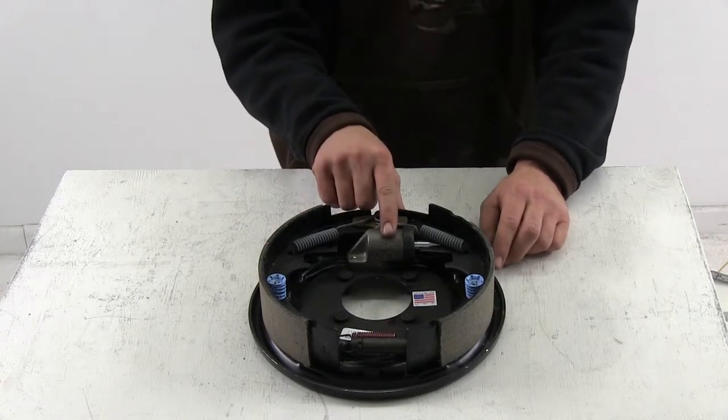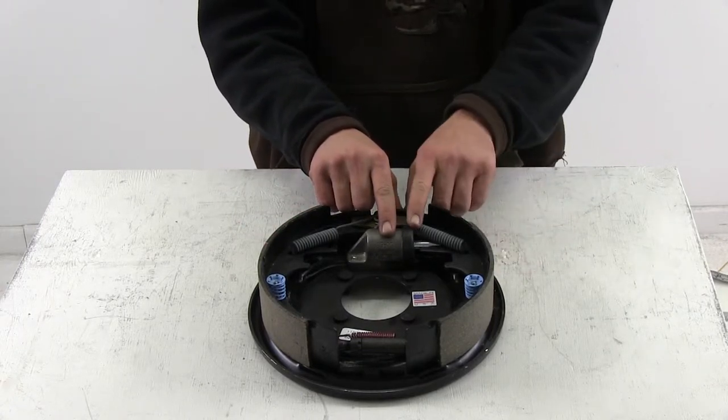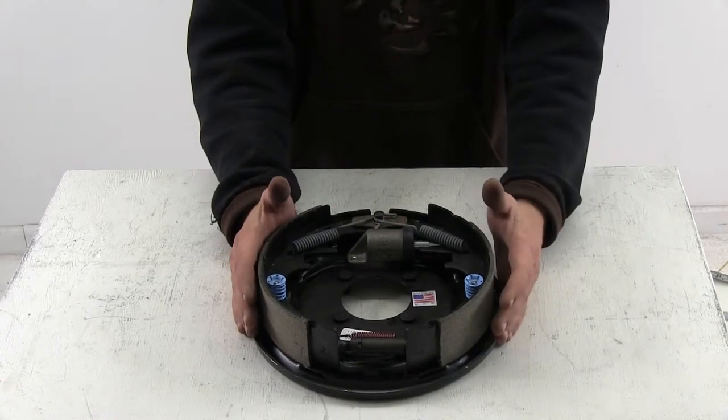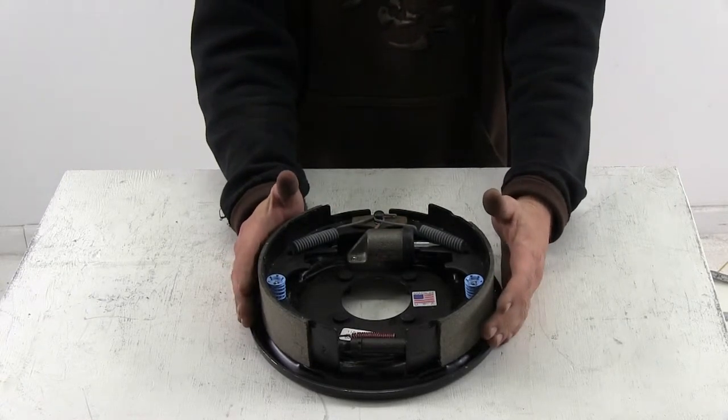This is a single servo setup which means it has one wheel cylinder and one piston that pushes out against the shoes and they will create a wedge effect inside the brake hub drum assembly.